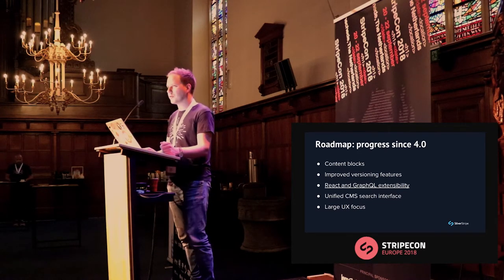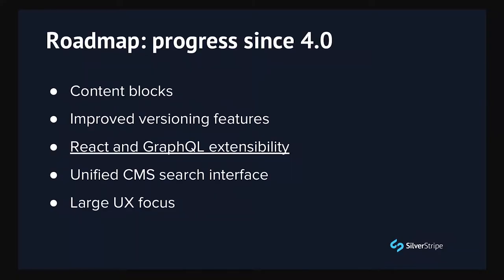SilverStripe 4.1 introduced the public web root, separating public-serving files from private ones. There's been a lot of work on better HTTP caching in 4.2. There's been a massive focus on user experience, with a team of three or four people improving CMS usability and accessibility. This includes creating a design system manager — basically an online style guide — and a React pattern library showing all React components, how to use them, and prop variations.